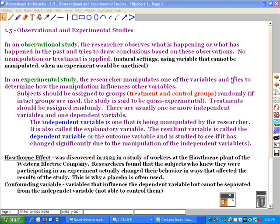There's usually one or more independent variable and one dependent variable. The independent variable is the one that's being manipulated by the researcher. The resultant variable is the dependent variable or the outcome variable, and that's the one that's studied to see if it's changed significantly because of the manipulation of the independent variable.